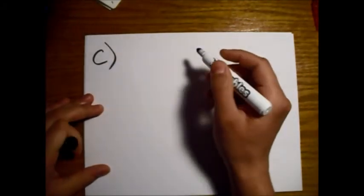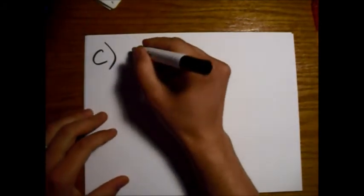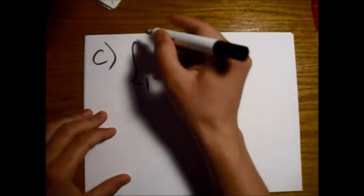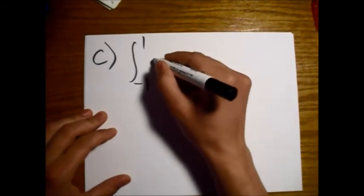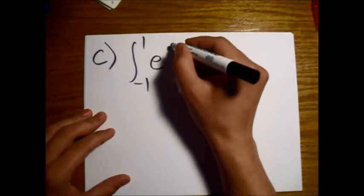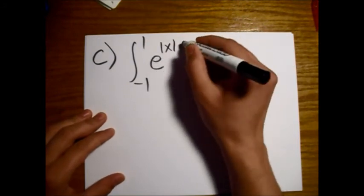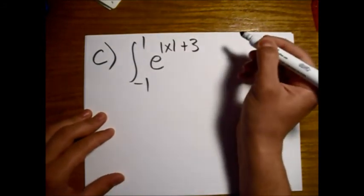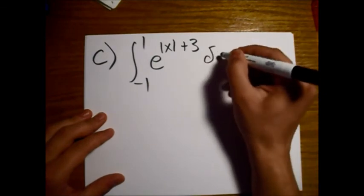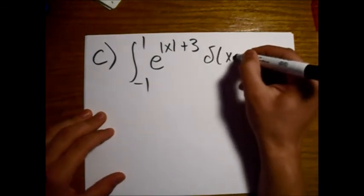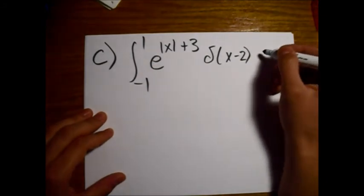Alright, and for part c, we have kind of a weird integral going from minus 1 to 1, and then we have the exponent of the absolute value of x plus 3, and then our Dirac delta function of x minus 2, dx.